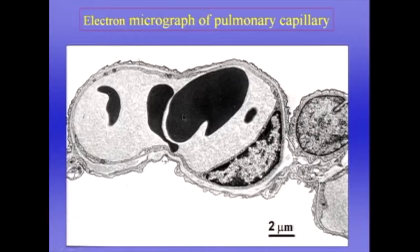Now this blood gas barrier is extremely thin, and in fact we can't identify it in a light micrograph like this. So we need to go to an electron micrograph, and this is shown here. Here's the capillary in the alveolar wall running across the slide, and we have alveolar gas on both sides of the capillary. Within the capillary lumen we can see the red blood cells and also the plasma.